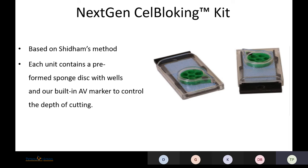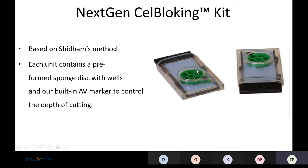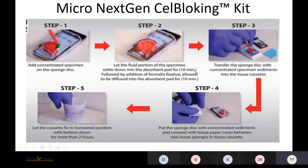Next generation cell blocking kits are based on Shidham's method. Each unit contains a preformed sponge disc with wells and a built-in AV marker to control the depth of cutting. The cells of interest are concentrated into these wells. In the procedure using the micro next-generation cell blocking kit, after centrifugation we add the concentrated specimen onto the sponge disc, then wait 10 minutes for excess fluid to be absorbed on an absorbent pad. We then add 10% formalin and wait another 10 minutes for excess formalin to be absorbed. The sponge disc is then discarded and processed like a routine histopathology section.